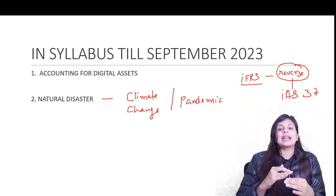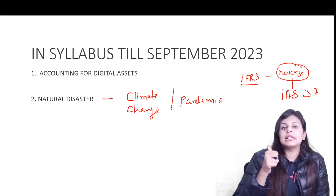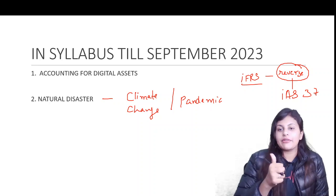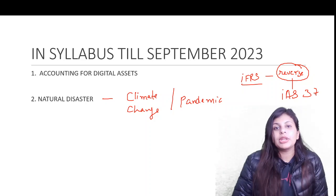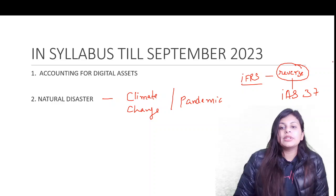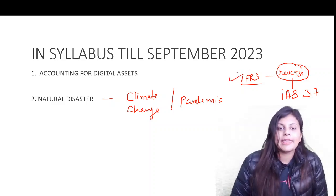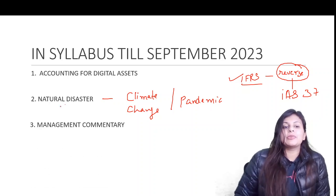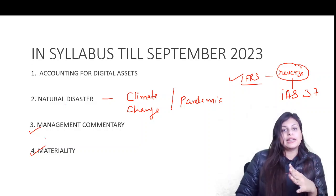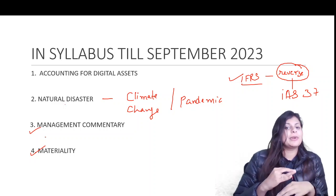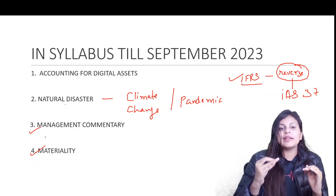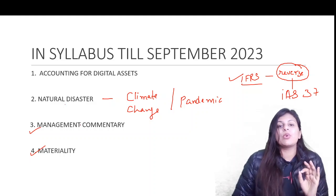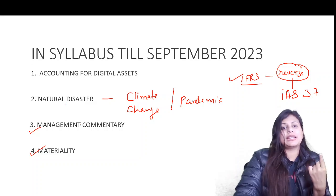For solving current issues, the input required is your syllabus and your IFRSs. The four current issues in your syllabus are: digital assets, natural disaster, management commentary, and materiality. Previously we had presentation, disclosure, etc., but those have been waived off. In the current syllabus, at least till September 2023, these four are what you need to cover. If you are planning to give your exam after September 2023, stay tuned on this channel for updates.